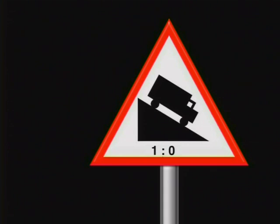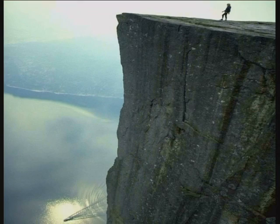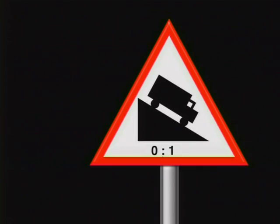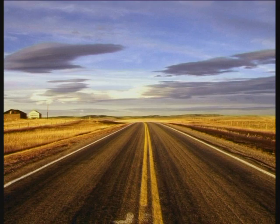This sign says that the slope is one to zero. How steep do you think the line would be? The ratio tells us that we would go down one unit and we move zero units across. This would be a cliff — no car could drive down the side of a cliff. This sign says the gradient is zero to one, which means we go down zero units for every one unit across. This kind of slope is no slope at all. It's just flat.